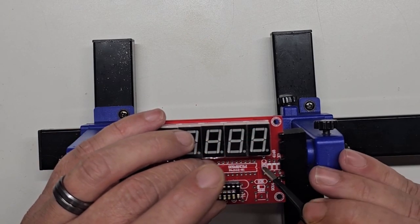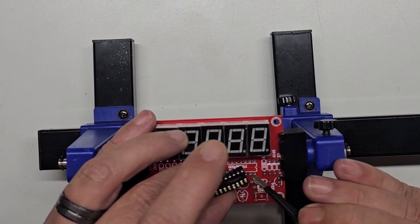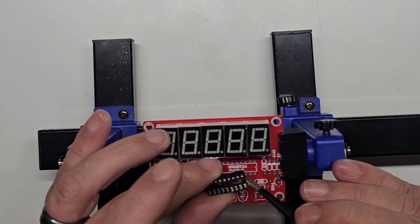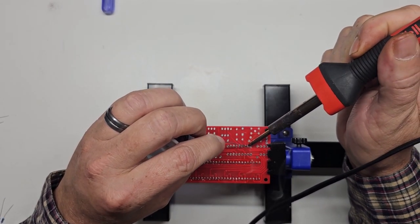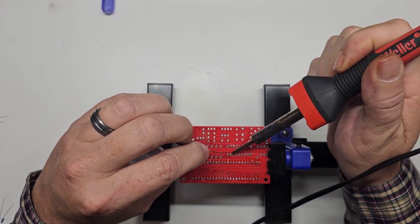Next I'll mount the IC holder. You need to line up the notch in the holder with the picture on the board. I like to solder a pin on opposite corners so it stays flush with the board while I solder the rest of the pins.